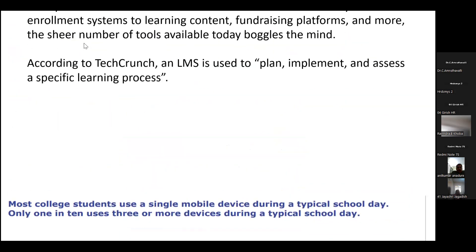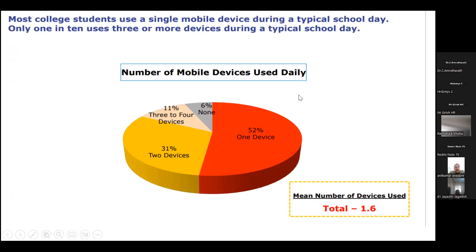A survey conducted by this company shows that most college students use a single mobile device during a typical school day, and only one in 10 use three or more devices during the school day. At the school level, 52% of students in India are having only one device. But 31% of students across India are having more than one device, and 11% of students are having more than three to four devices — they may have a smartphone, tablet, and laptop.